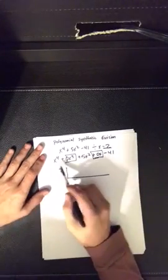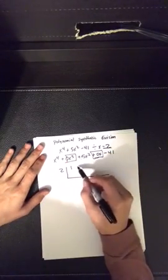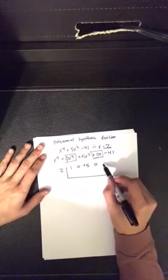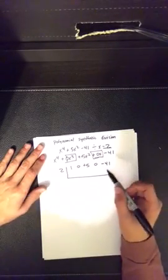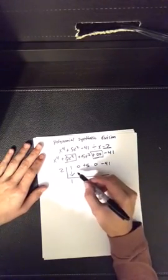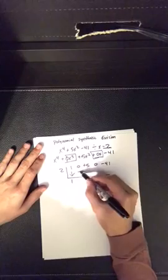Now we bring all these numbers down. We have a 1, 0, a positive 5, 0, and a negative 41. So we bring the first number down and we multiply that by 2. 2 times 1 is 2.